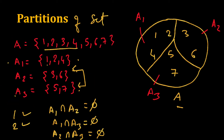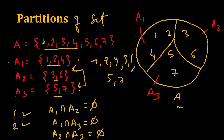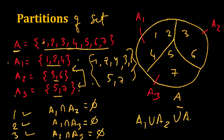The third property: the union of all sets in S should equal A. The union of A1, A2, and A3 gives {1, 2, 4} union {3, 6} union {5, 7}. We see that all seven elements are present and there is no extra element, so this is the same as set A. Therefore A1 union A2 union A3 equals A, and the third condition is also satisfied.